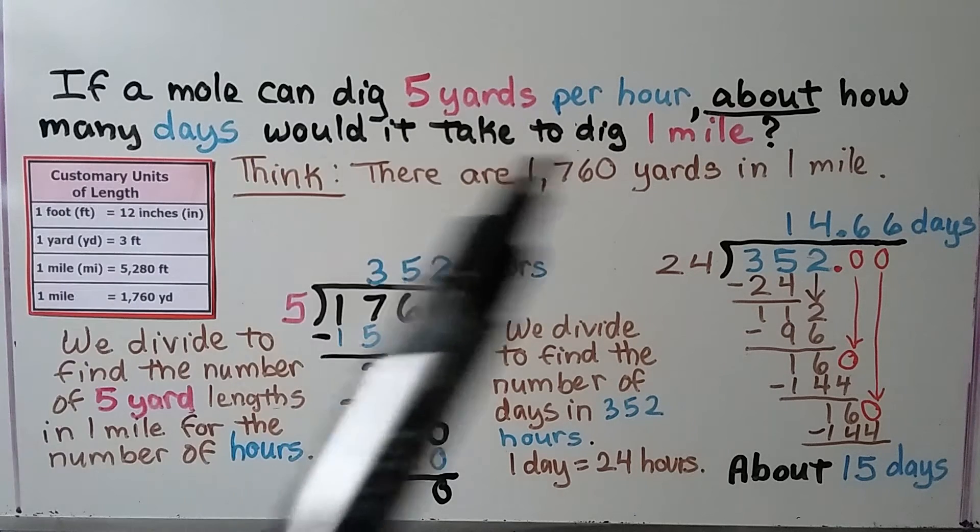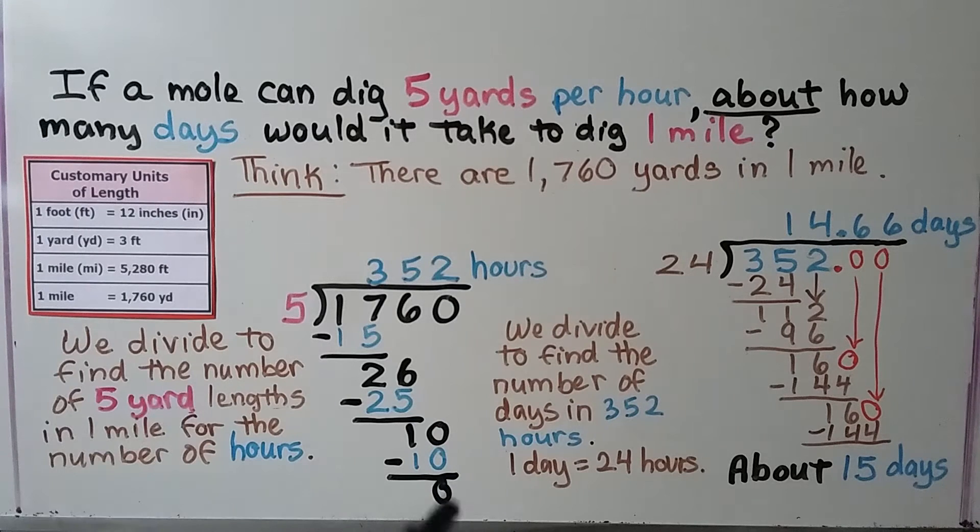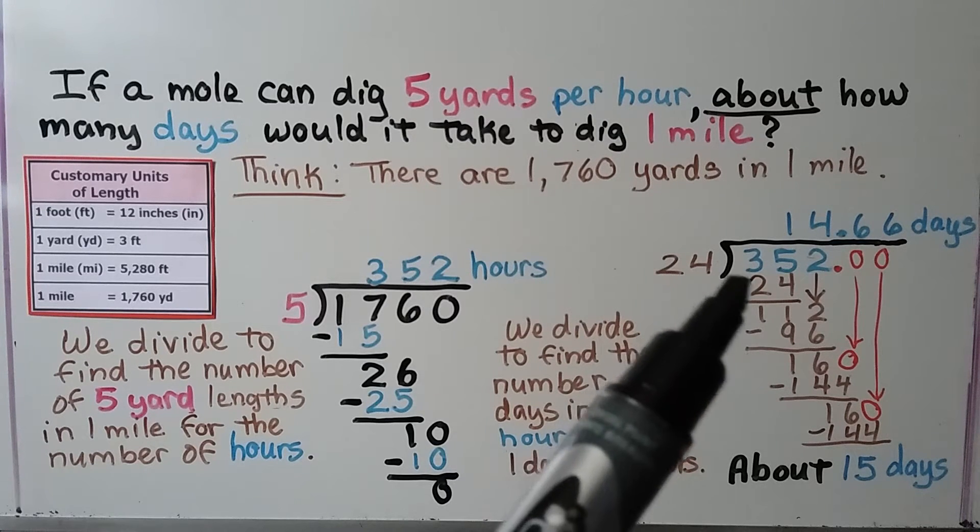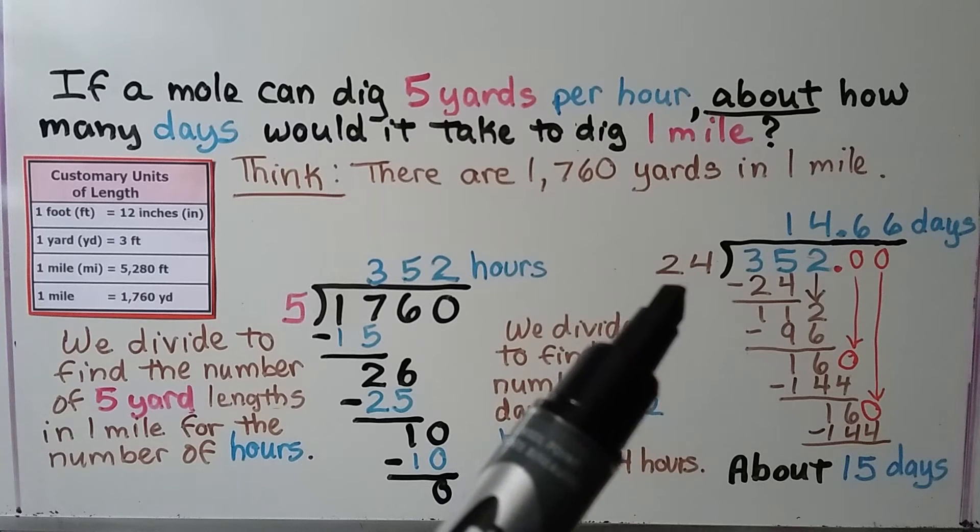We need it in an estimated amount of days. So we divide to find the number of days in 352 hours. And one day is 24 hours. So we do 352 divided by 24.